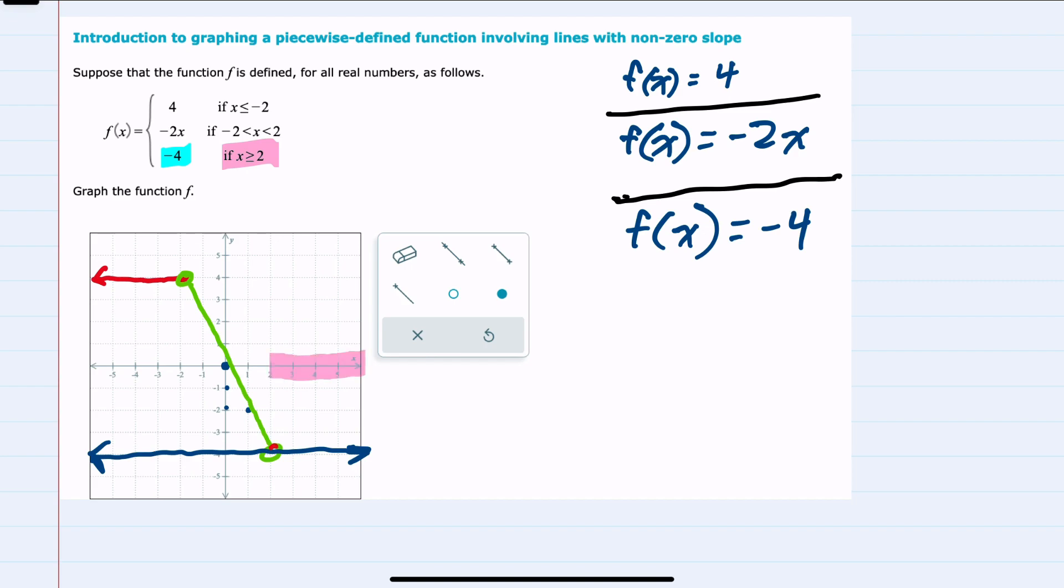So a solid dot at 2 and all values to the right. Erasing the part that's not piecewise defined, we have this third piece.